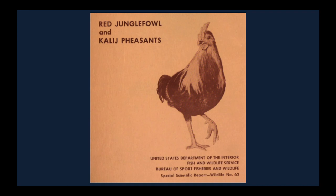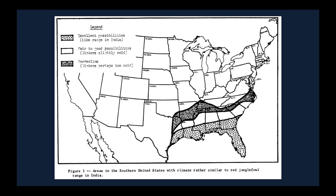Just so you see that niche modeling is not new, I want you to see a publication from the U.S. Fish and Wildlife Service, I think from the 1940s. What I want you to see is this map: areas in the southern United States with climate rather similar to red jungle fowl range in India. He has an area in the extreme southeast that is 'excellent,' an intermediate area that is 'fair,' and a shaded area called 'borderline.' This is a lot like ecological niche modeling, except done by hand and by intuition, with no quantitative tools.